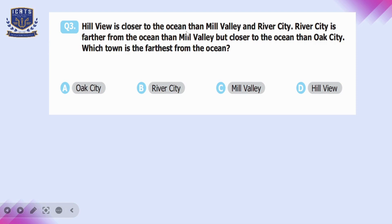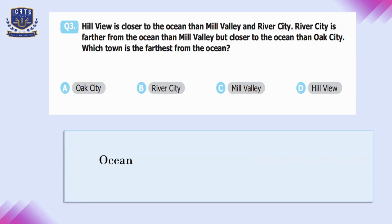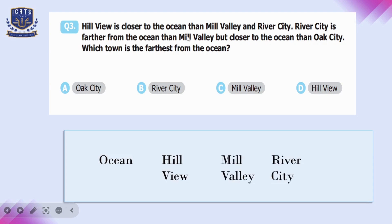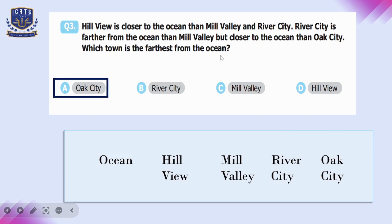Question number three: Hill View is closer to the ocean than Mill Valley and River City. River City is farther from the ocean than Mill Valley but closer than Oak City. Arranging in order from the ocean: Hill View, then Mill Valley, then River City, and Oak City is farthest. So option A, Oak City, is the correct answer.